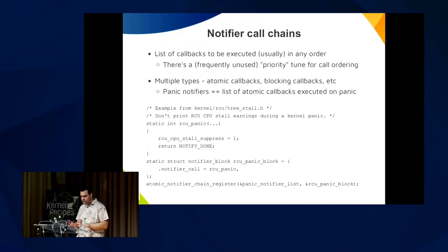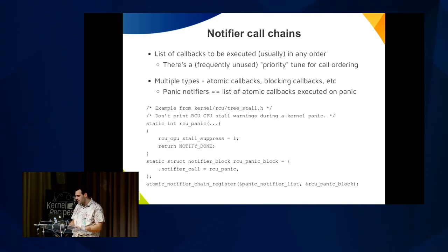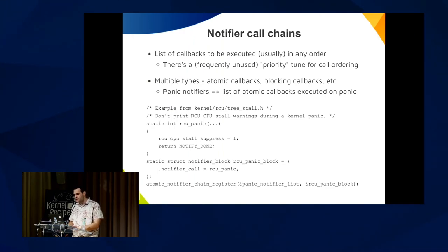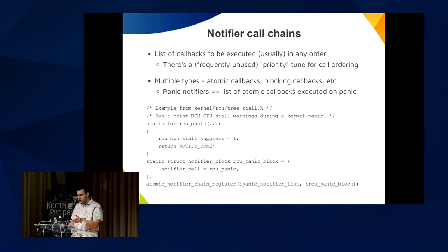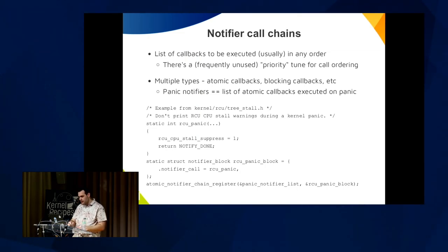That's the context of why we ended up working on panic notifiers — the idea of trying to run panic_print before kdump. To do that we need to run the notifiers. Notifiers are a very simple concept: a list of callbacks you can register and run in a defined order. We have a priority concept for ordering, though it's not really used in the panic notifier call. The panic notifiers is an atomic notifier call chain. Here's a simple example — the RCU notifier — it disables the RCU, and registers the function using atomic_notifier_chain_register.